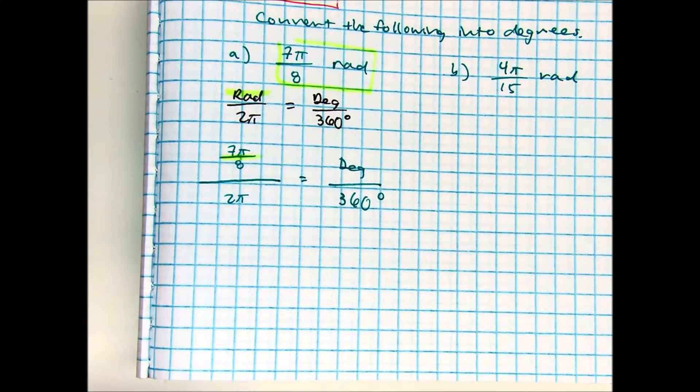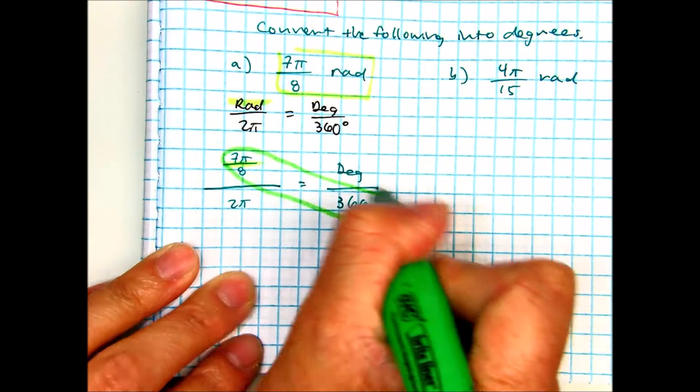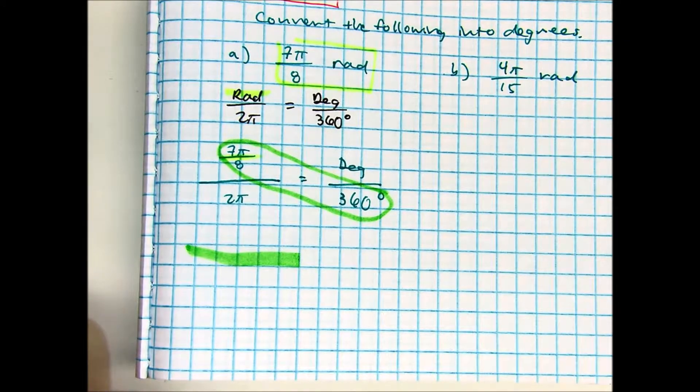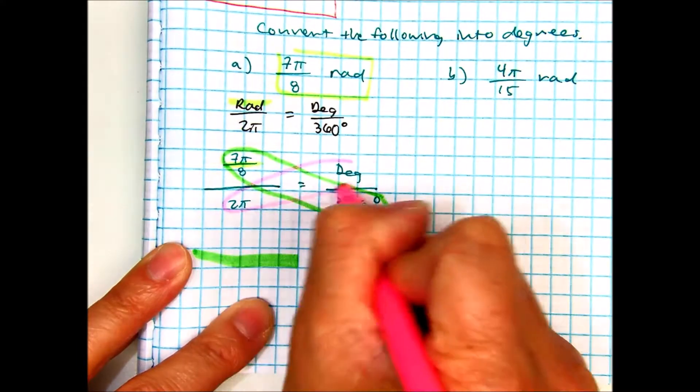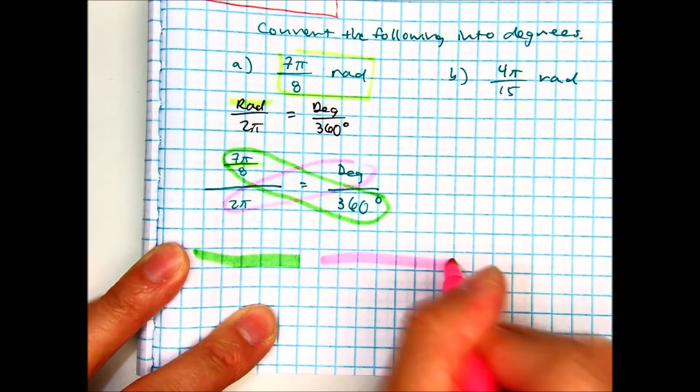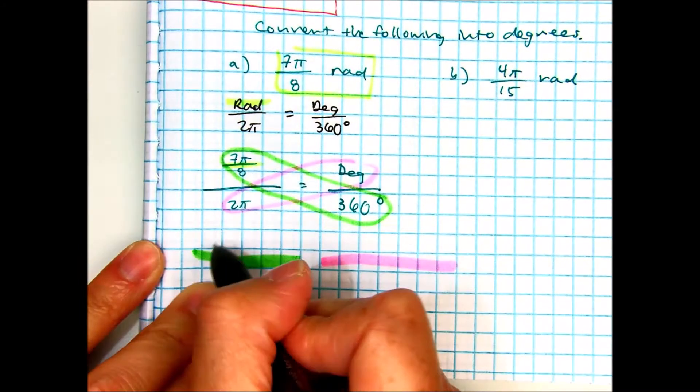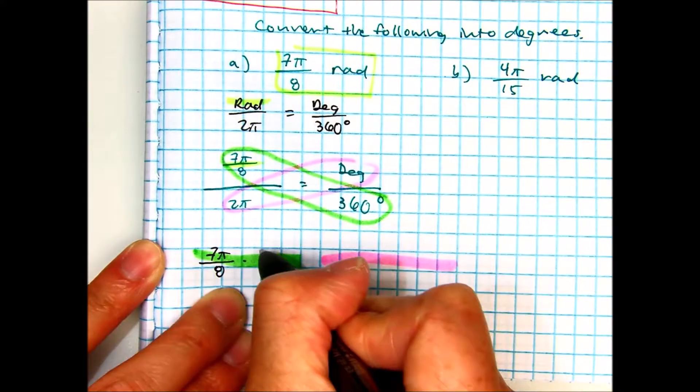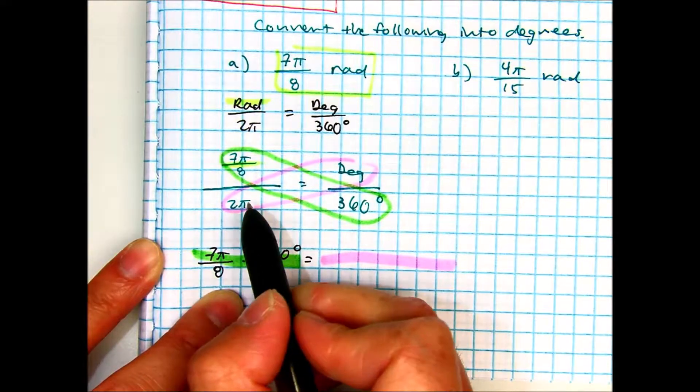Next, we're going to cross-multiply. So, I'm going to have 7π over 8, times 360 degrees, equals 2π times degrees.